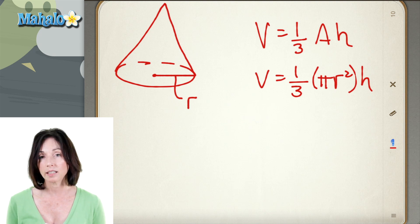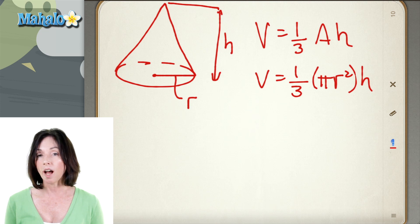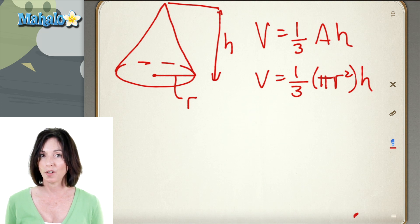And the height is the vertical height, the distance from the tip of the cone down to its base. That's the height that you're looking for, not the distance of the slanted line that makes up the cone. It has to be the vertical height in order to find the volume correctly.